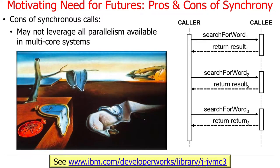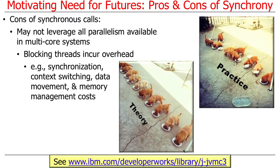There are some downsides, however. Sequential or synchronous approaches, even if they're parallel, may not leverage all the parallelism available in a modern multi-core system. In particular, whenever you start blocking threads, there's overhead incurred — synchronization, context switching, data movement, memory management costs, and so on.